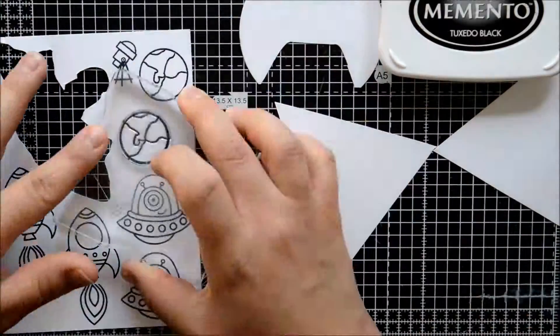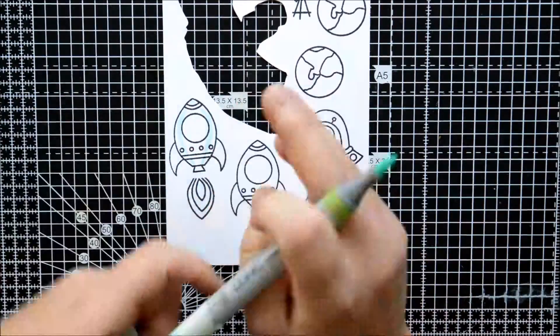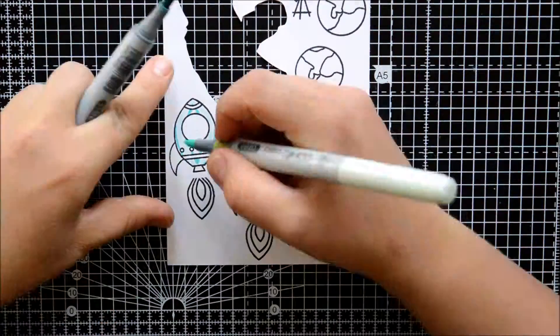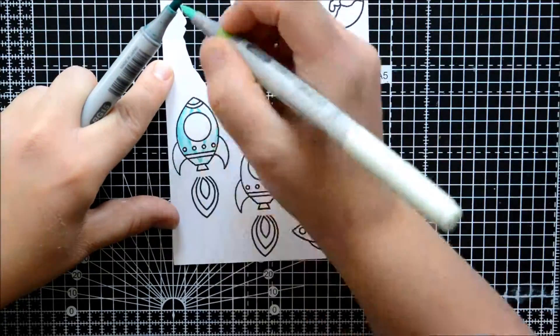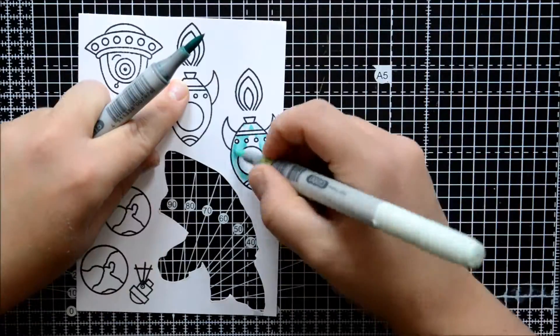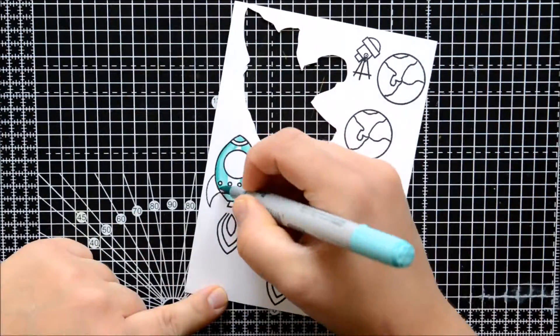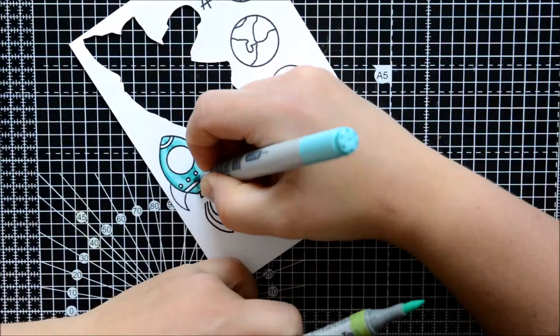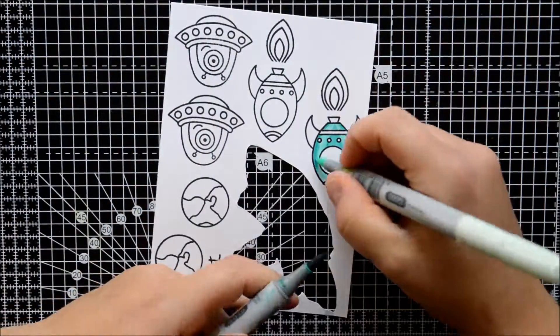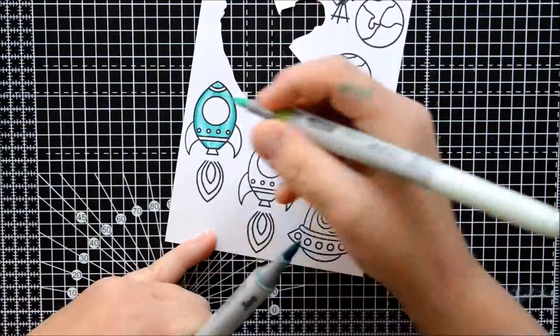I used Memento Tuxedo Black to stamp my images on some Neenah Solar White card, and that's also the paper I used for the background, so I did not use watercolour paper. I used my Copic markers, and the Memento Tuxedo Black is Copic resistant, so that's good.